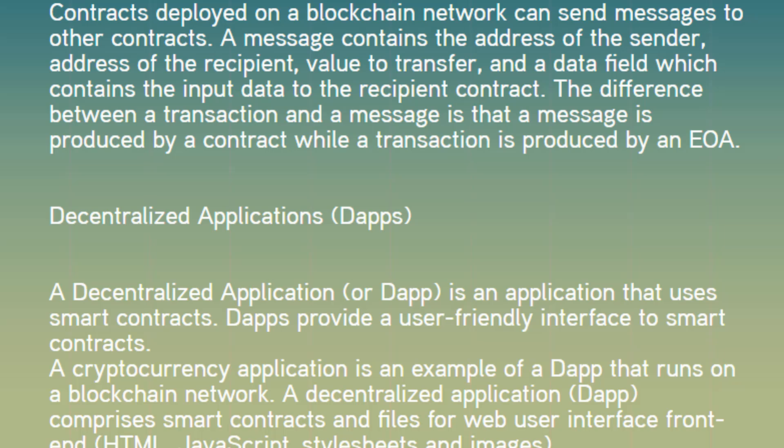Decentralized Application or DApps. A decentralized application, or DApp, is an application that uses smart contracts. DApps provide a user-friendly interface to smart contracts. A cryptocurrency application is an example of a DApp that runs on a blockchain network. A DApp comprises smart contracts and files for web user interface, front-end HTML or JavaScript, stylesheet, etc.